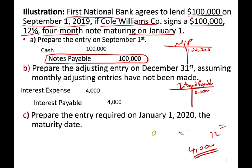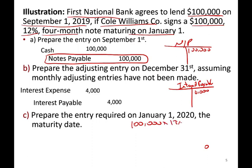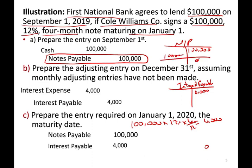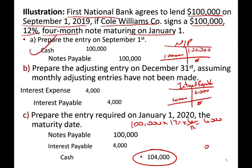On January 1st — the maturity date — we prepare the final entry. We have to pay all the interest: $100,000 times 12% times 4/12 equals $4,000. We also have to pay back the principal. So we debit notes payable $100,000 — the note is gone — debit interest payable $4,000, and credit cash $104,000. So in summary: we borrowed money, accrued the interest, then paid the note with the accrued interest.